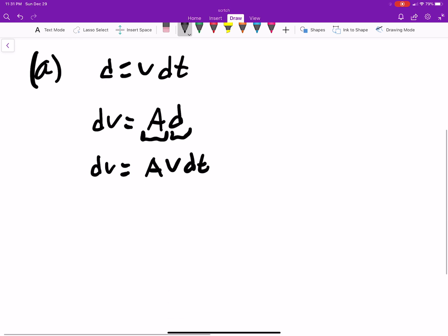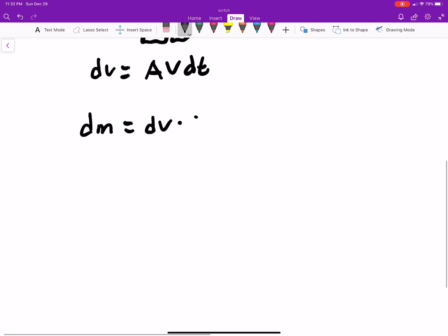And now we need to look at the mass. Now the mass is going to be your area times, or I'm sorry, it's going to be your volume times your density, which they give us. Well, the dV is just A V dt. So dM is really just ρ times dV, which was A V dt.